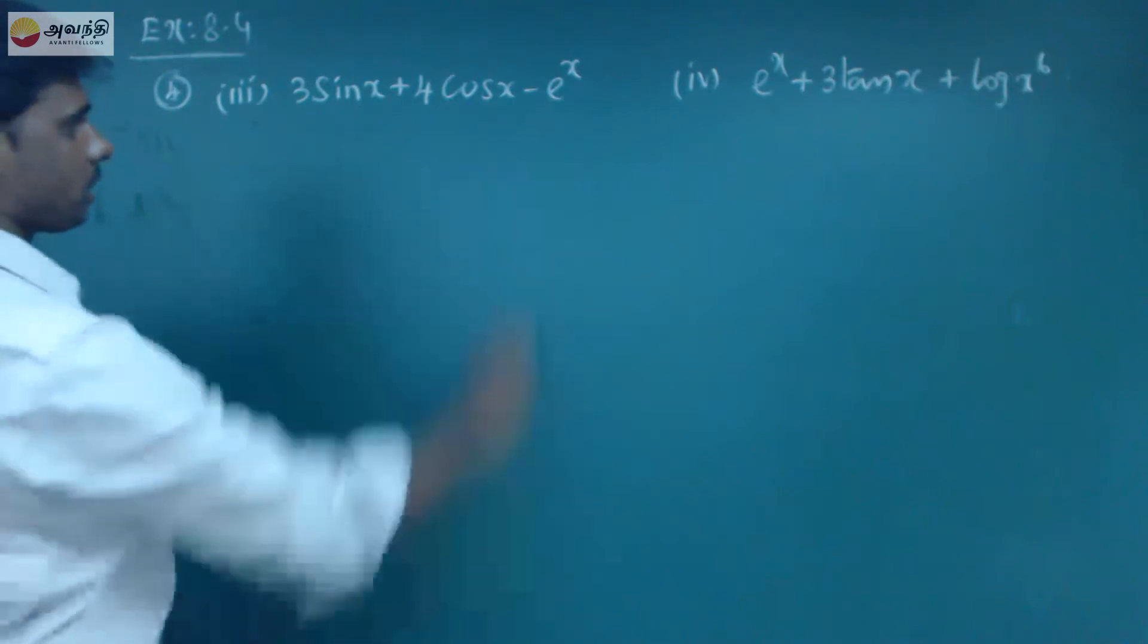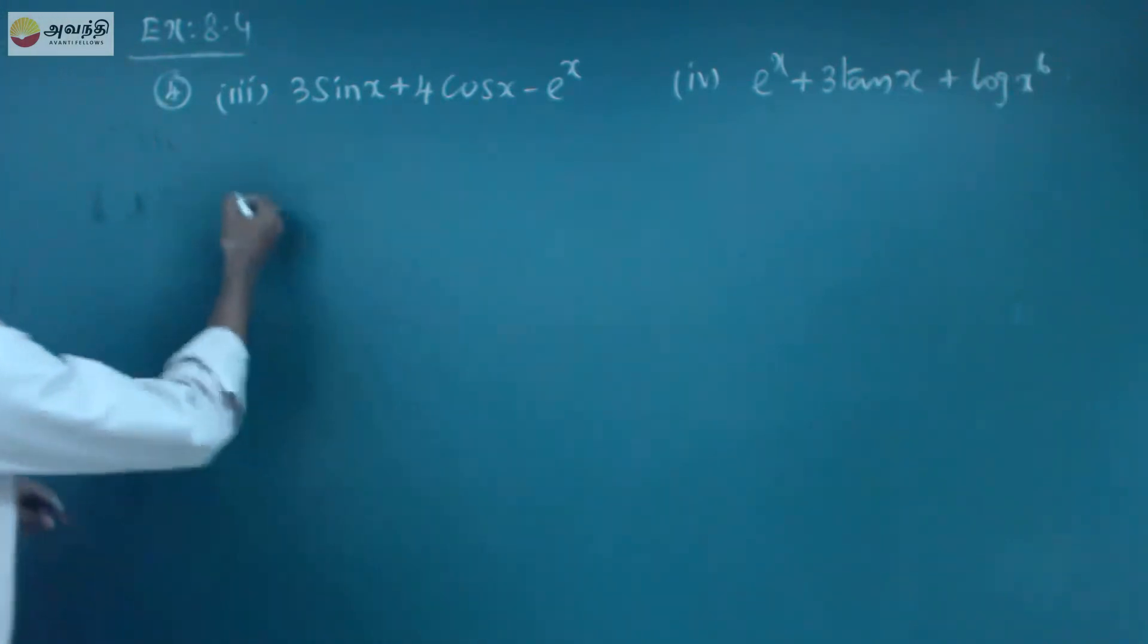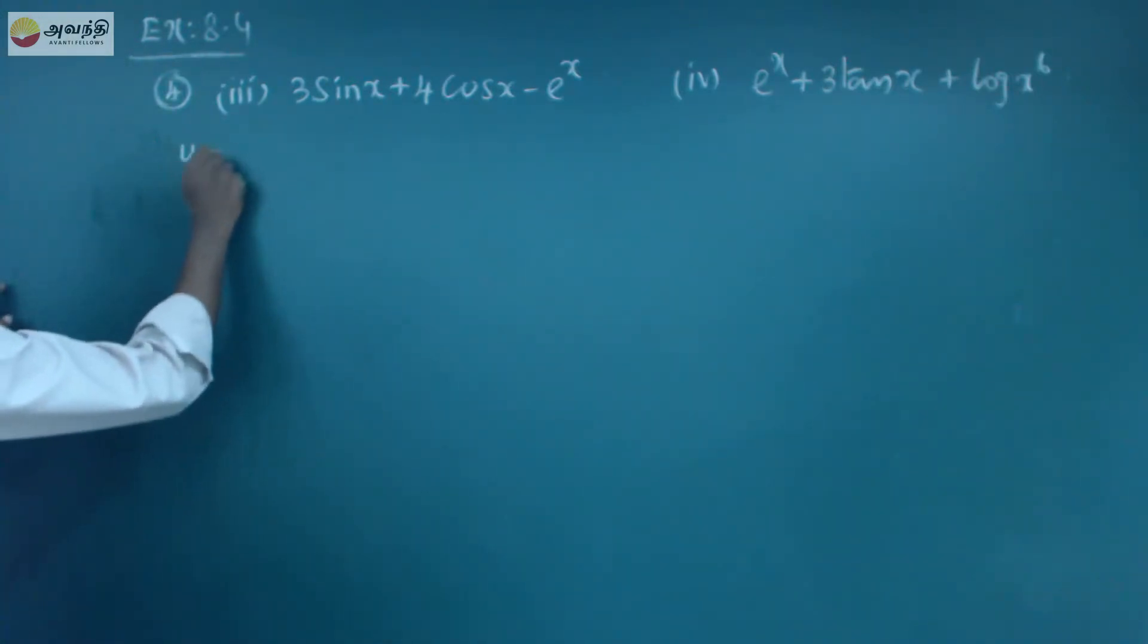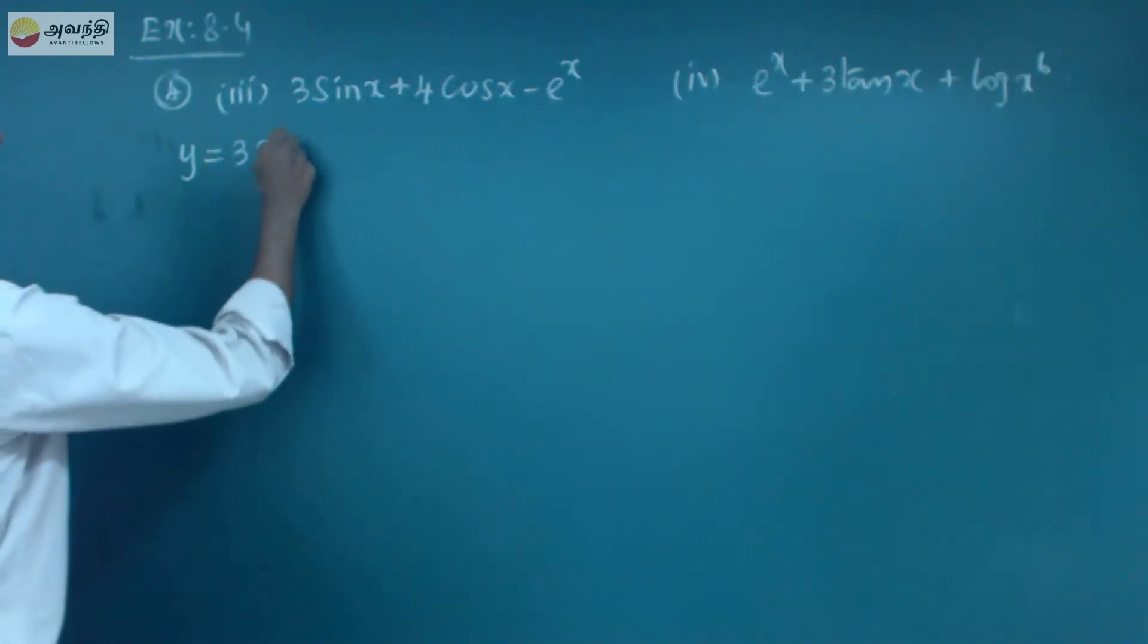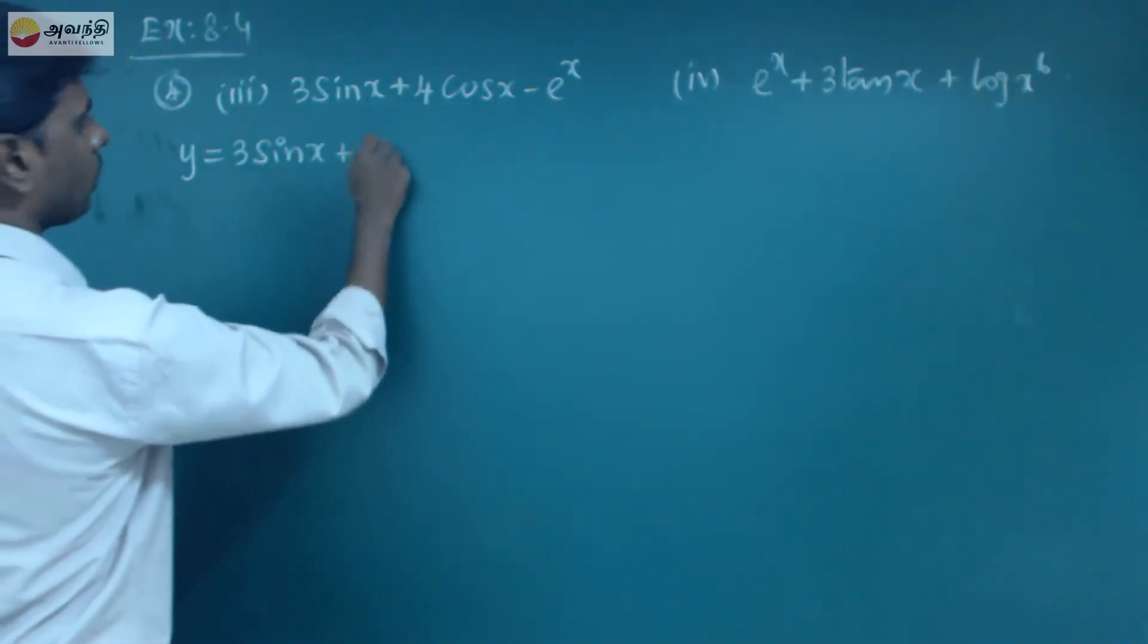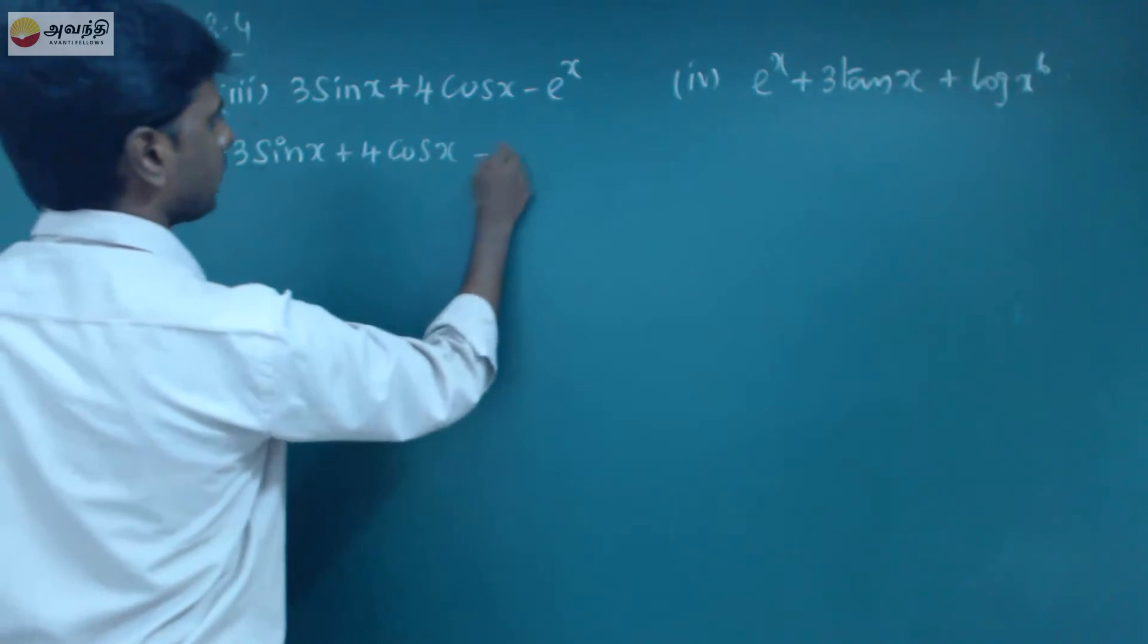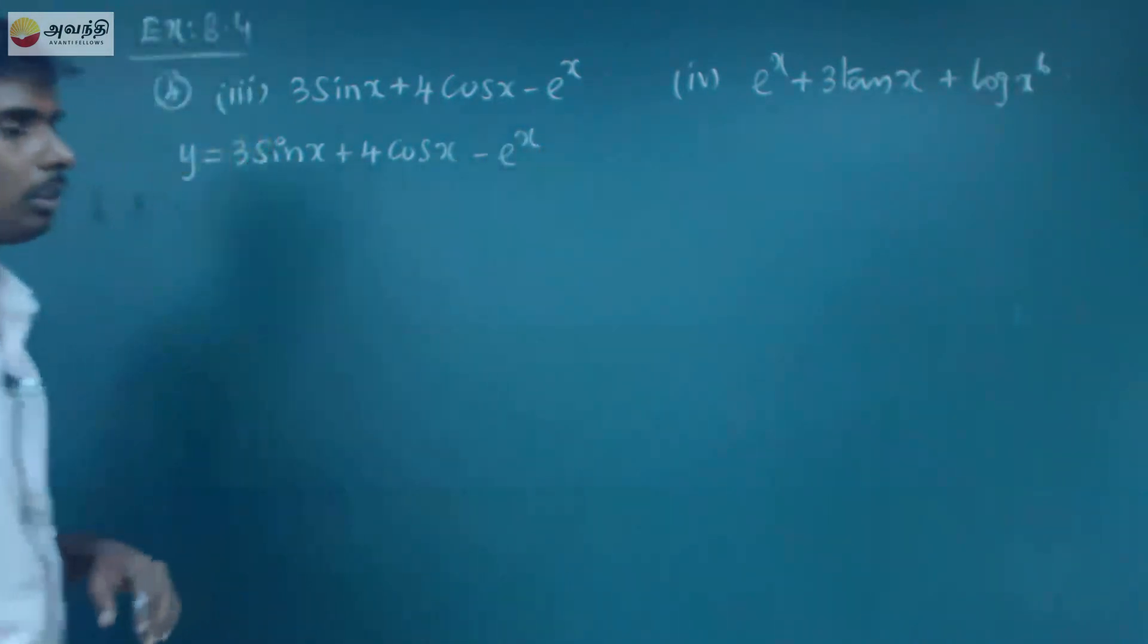So if you do differentiation, you can do x, so you can add a name, y. y is equal to 3 sin x plus 4 cos x minus e power x, okay?